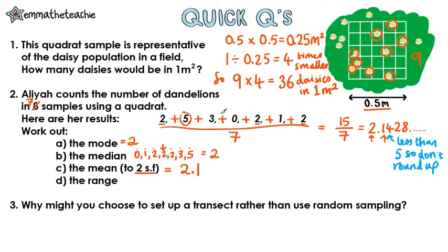And finally, the range is the biggest value, take away the smallest value, which is 5 minus 0, which gives us 5.